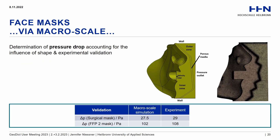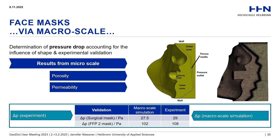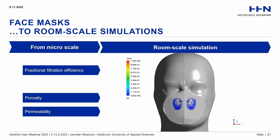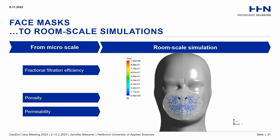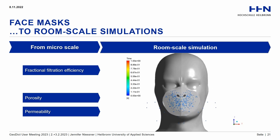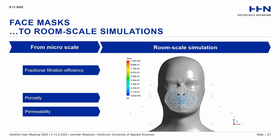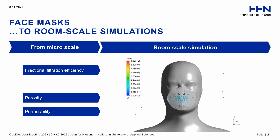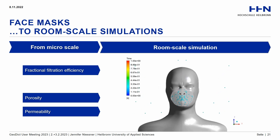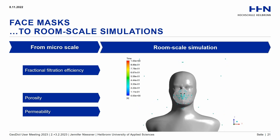Moving on to the macro scale, we first validated the macro scale simulation model by looking at pressure drop accounting for the shape of the mask. We used porosity and permeability from the micro scale simulations and determined pressure drop both experimentally and by simulation. The match between experiment and simulation is quite good, giving us confidence to proceed to the room scale. We used fractional filtration efficiency, porosity and permeability from the micro scale simulations, placed a mask on our virtual test head, and examined where particles would move.